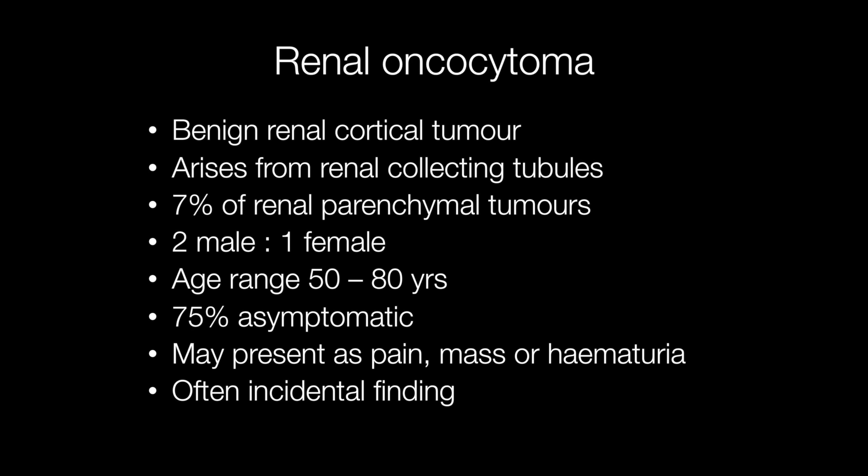They account for approximately 7% of renal parenchymal tumours. They are nearly twice as common in males than females and the typical age range is 50 to 80 years old. 75% of oncocytomas are asymptomatic but they may present as pain, mass, or haematuria.